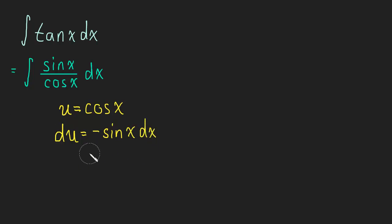We can multiply both sides by negative one and move that negative over.